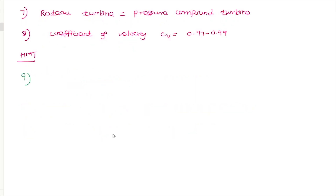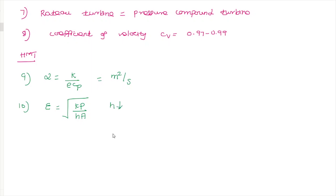The next question is about thermal diffusivity units. Thermal diffusivity equals k divided by (ρ × Cp), and the unit is m²/s. The following question asks: if efficiency increases when thermal conductivity decreases, the correct answer is that decreasing heat transfer increases fin efficiency.